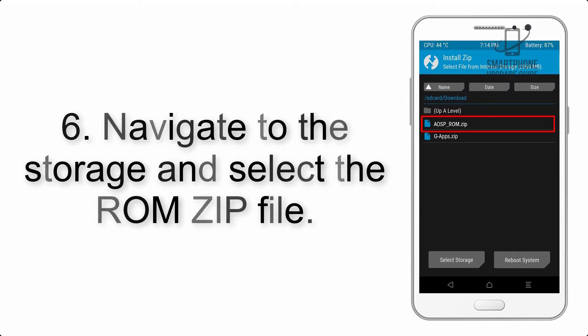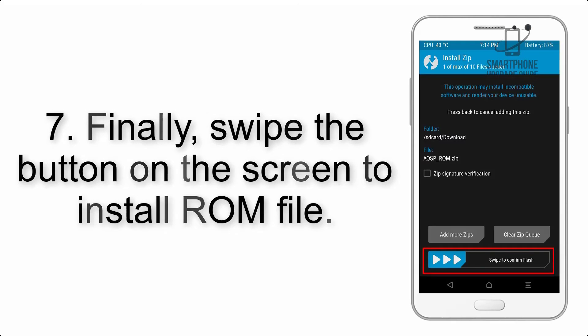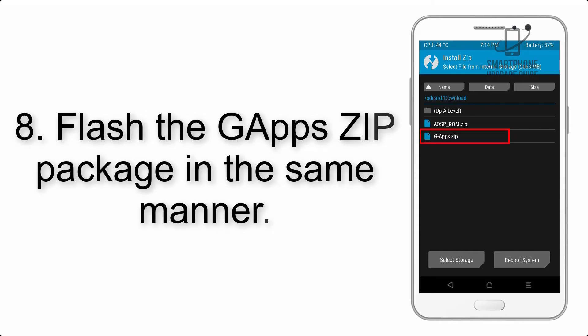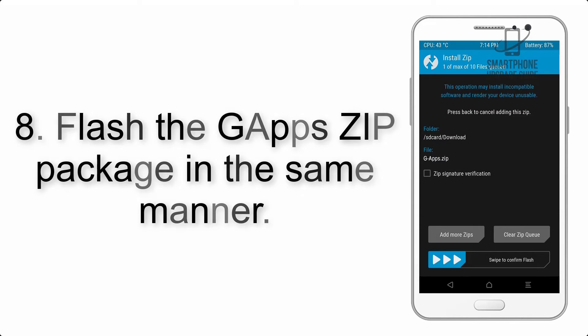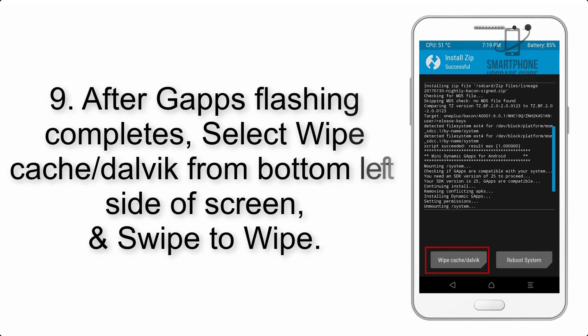Step 6: Navigate to the storage and select the ROM zip file. Step 7: Finally, swipe the button on the screen to install the ROM file. Step 8: Flash the Gapps zip package in the same manner.